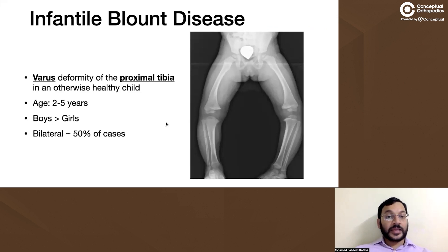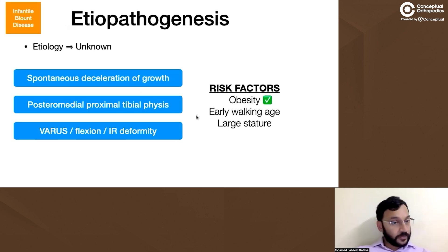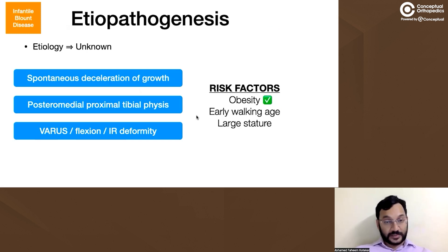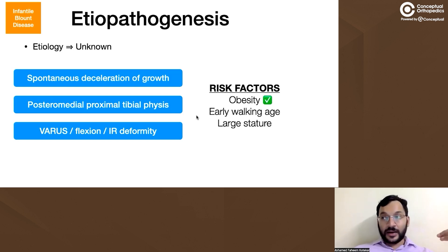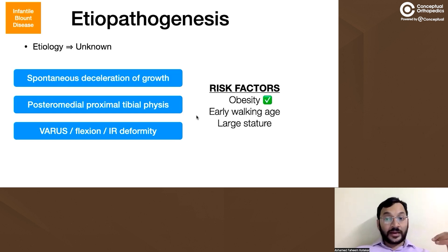If a child after two years of age continues to have a genu varum deformity and it is progressive, we call it Blount's disease. Infantile Blount's disease is seen more commonly in boys compared to girls and is bilateral in about 50% of cases. The etiology is unknown, but we believe there is a spontaneous deceleration of growth in the posterior medial proximal tibial physis. This leads to a deformity with three components: varus, flexion, and internal rotation. Risk factors include obesity, early walking age — around eight to nine months — and being a large child, but obesity has the highest correlation with Blount's disease.